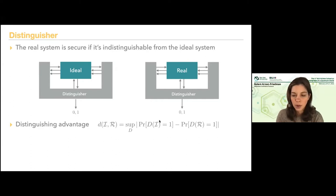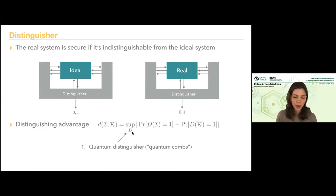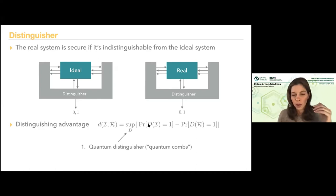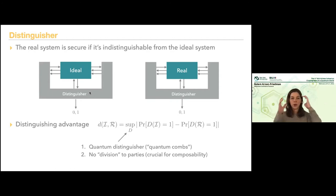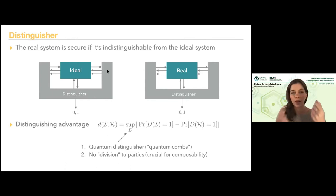There is a way to formally define these things using quantum combs, and that's what you take the supremum over — there is a mathematical definition in the papers in the reference list. A second important thing to notice is that there is no division to parties for the distinguisher. From a distinguisher point of view, it gets access to all interfaces together. This is very important for composability — the distinguisher can access all interfaces and decide whether it's the real or ideal system using all of them.